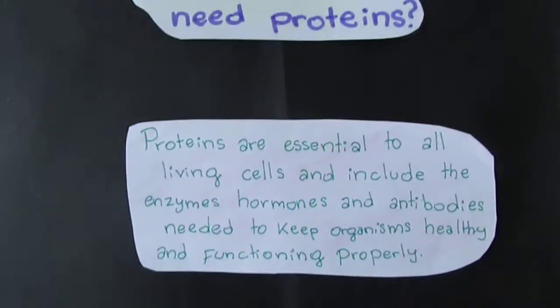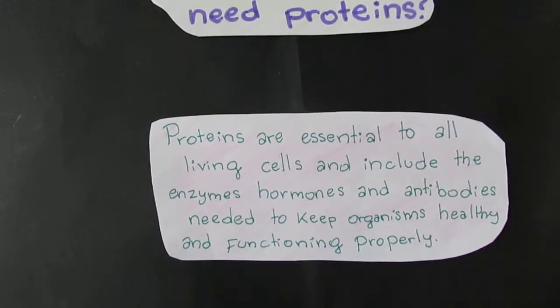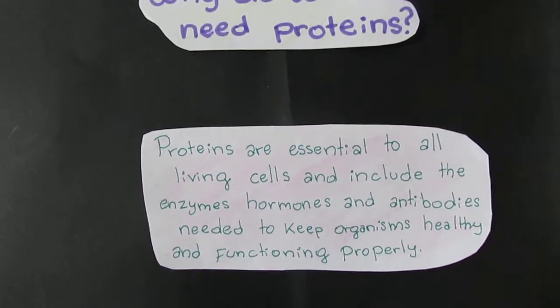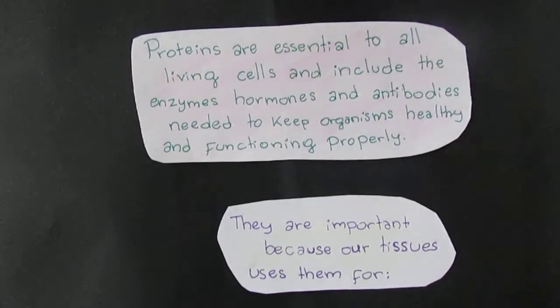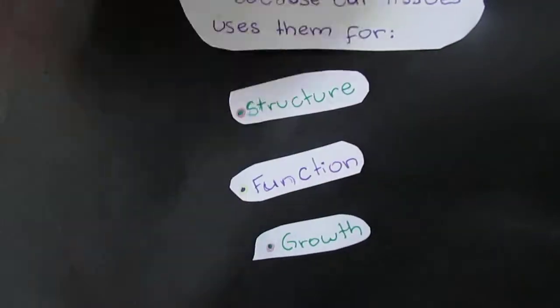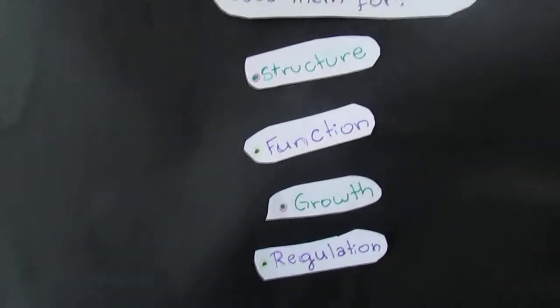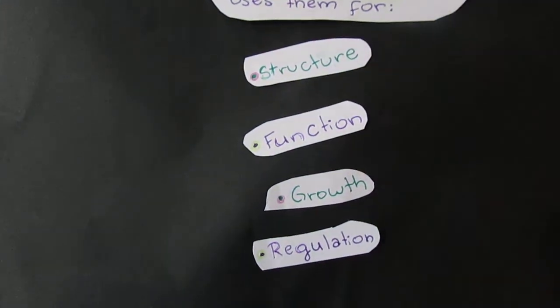Why do we need proteins? Proteins are essential to all living cells and include the enzymes, hormones, and antibodies needed to keep organisms healthy and functioning properly. They are important because our tissues use them for structure, function, growth, regulation like for the blood, and repair.